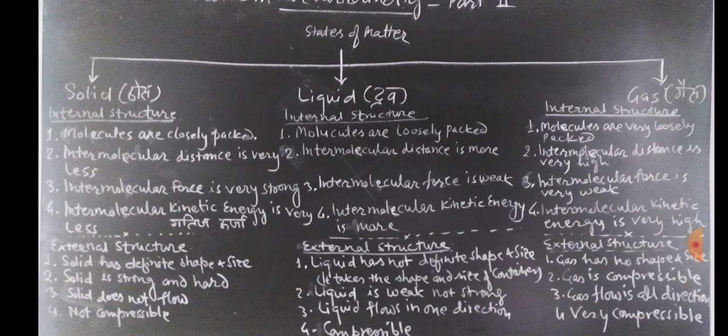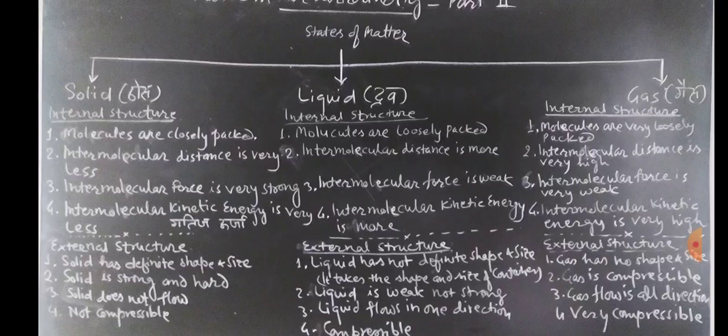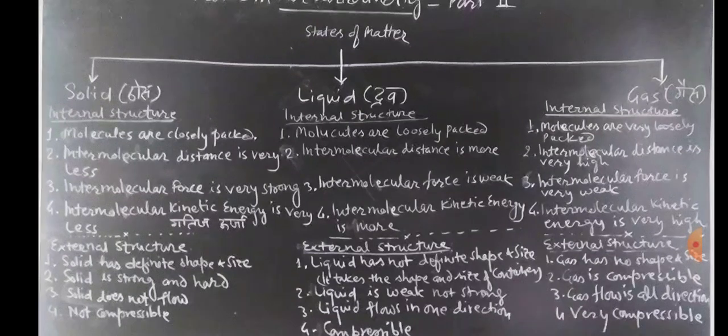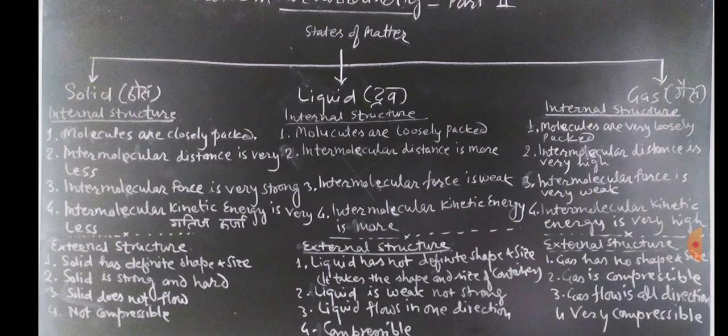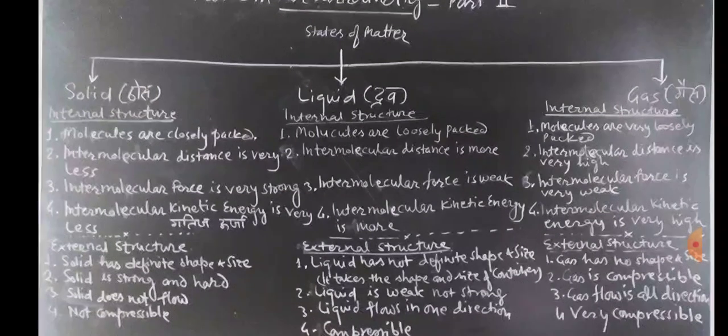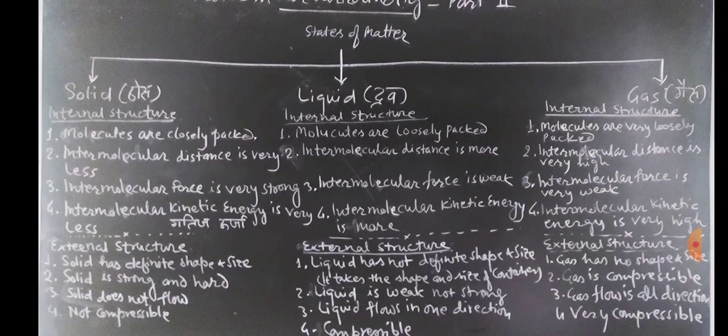Third is the gas. Internal structure of gas: molecules are very loosely packed. They have the distance between them very large. The intermolecular distance is very high. That's why the intermolecular force of attraction is very weak. That's why they flow in all directions. Intermolecular kinetic energy is very high, so that's why the gases can flow in all directions.